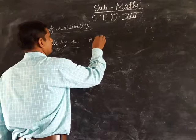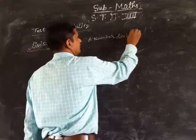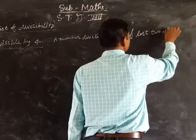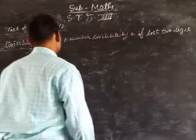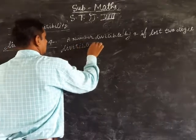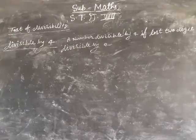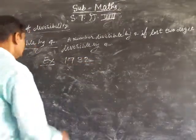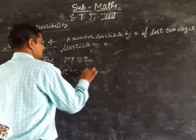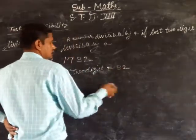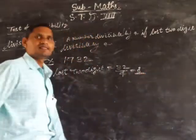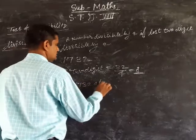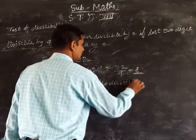A number is divisible by 4 if its last 2 digits are divisible by 4. Example: 1, 7, 3, 2. The last 2 digits are 32. Now 32 divided by 4 — it is divisible by 4. So the last 2 digits are divisible by 4. Hence 1732 is also divisible by 4.